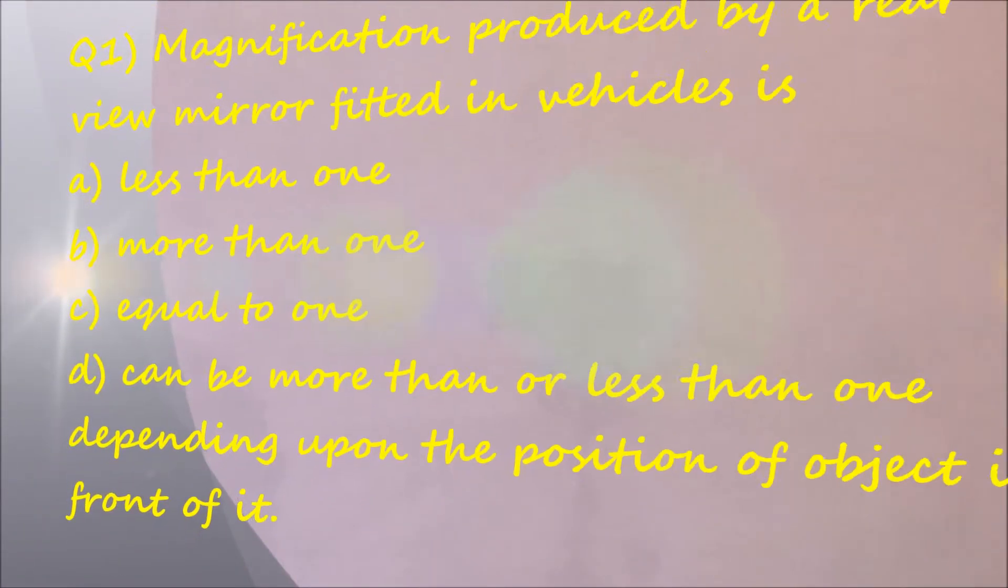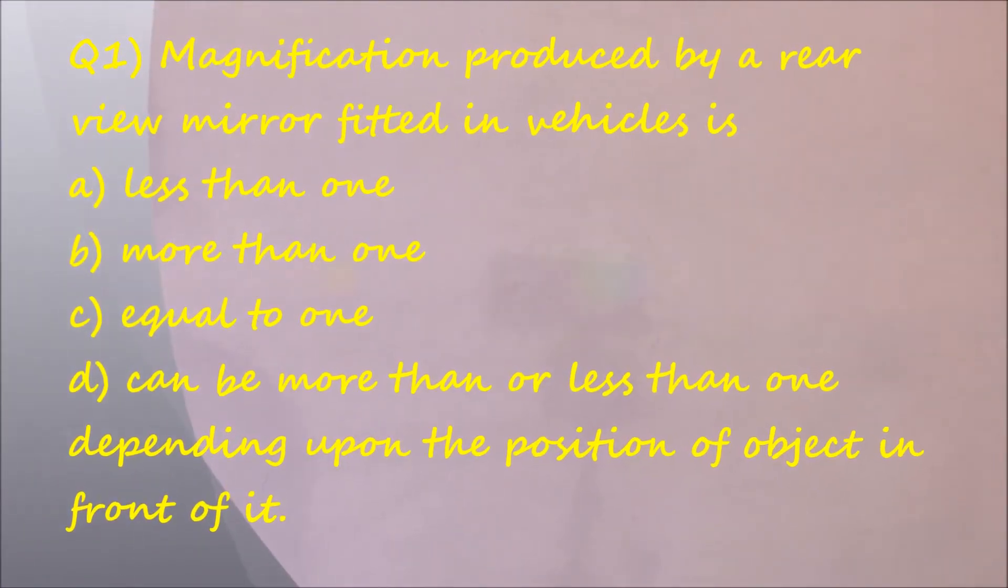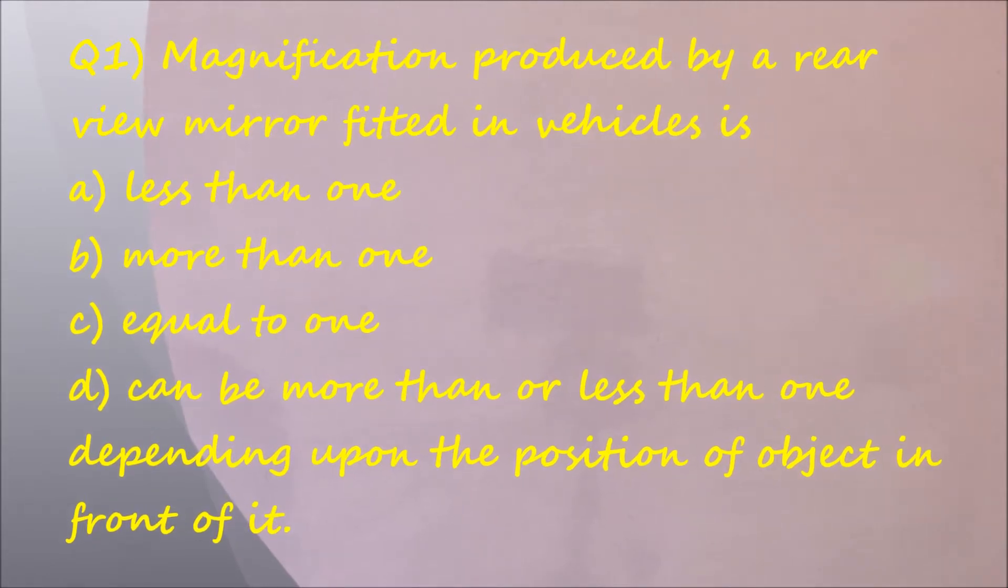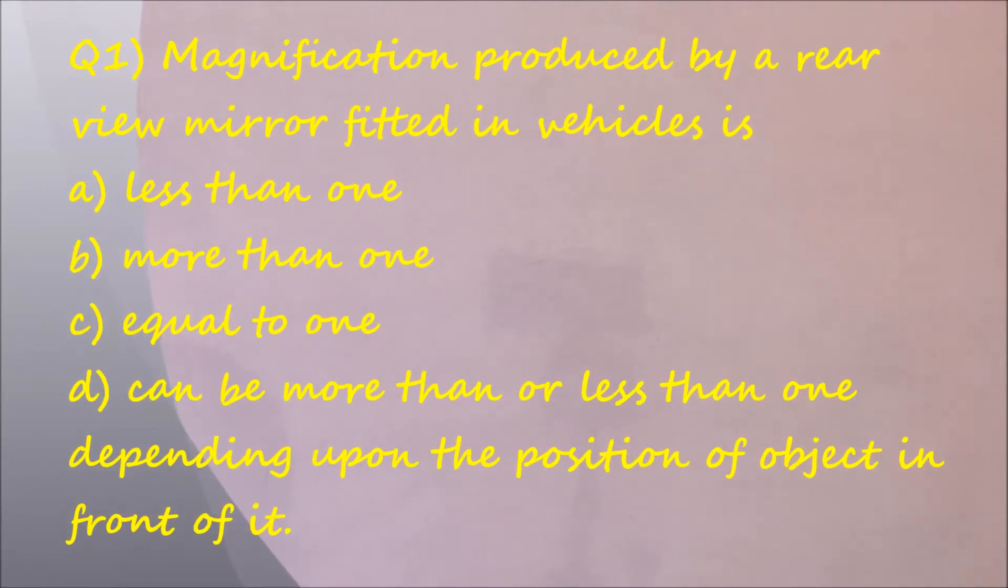Question number one: Magnification produced by a rear view mirror fitted in vehicles is: option A, less than one; option B, more than one; option C, equal to one; option D, can be more than or less than one depending upon the position of the object in front of it.